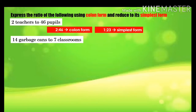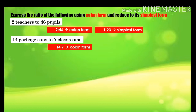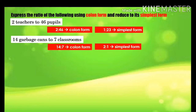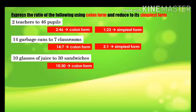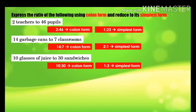Next example: 14 garbage cans to 7 classrooms. What is the colon form? 14 is to 7 is the colon form. What is its simplest form? 2 is to 1 is the simplest form. Let us have another one: 10 glasses of juice to 30 sandwiches. What is the colon form? 10 is to 30 is the colon form. How about its simplest form? 1 is to 3 is the simplest form.